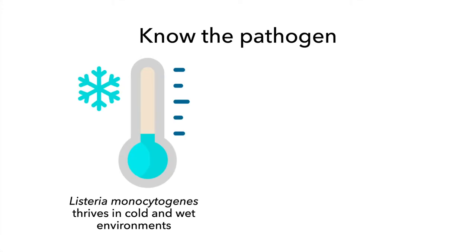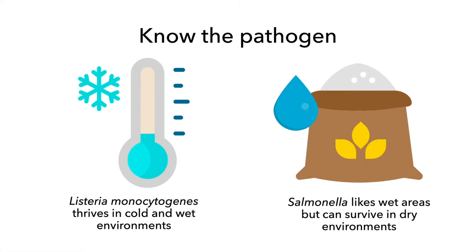For example, Listeria monocytogenes thrives in cold and wet environments. Salmonella likes wet environments but is also capable of surviving for long periods in very dry environments. Please refer to our pathogen-specific quick train videos for more information.